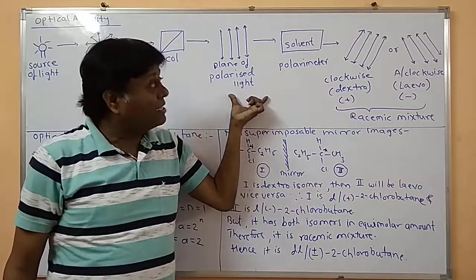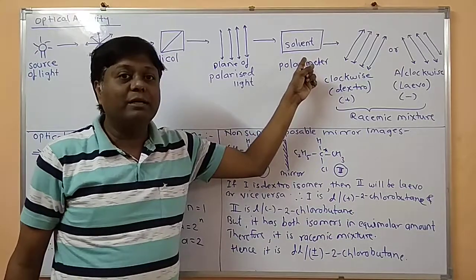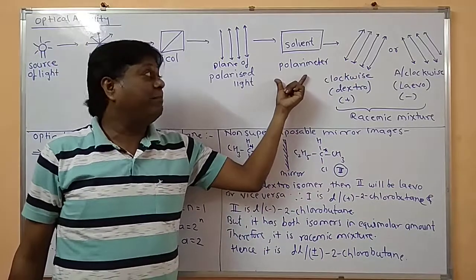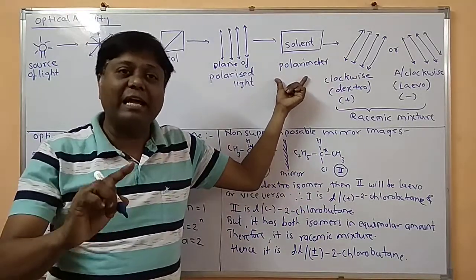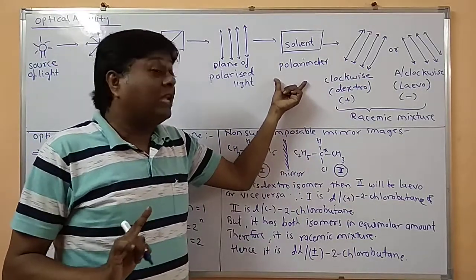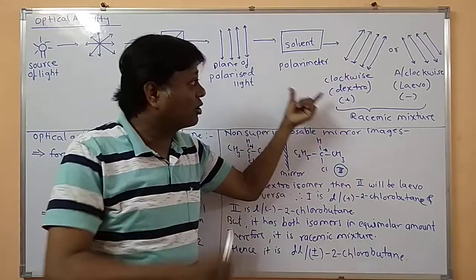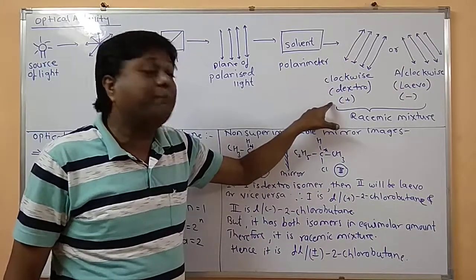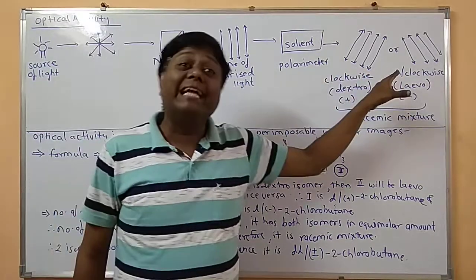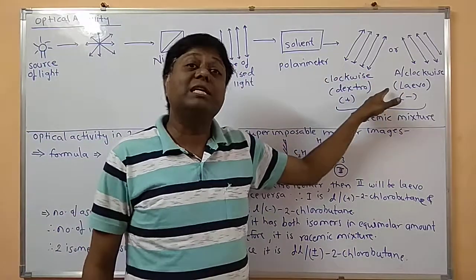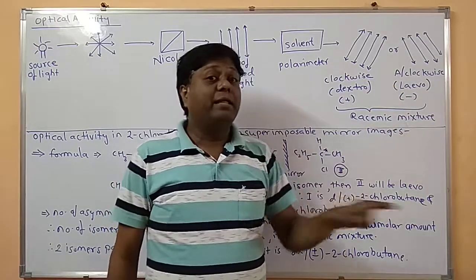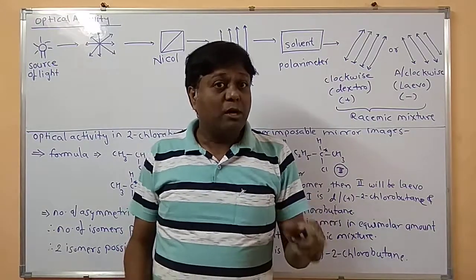When this plane of polarized light passes through the polarimeter, which contains the solvent under study for optical activity, this light rotates either clockwise or anticlockwise. If the light rotates clockwise it is called dextro rotation, represented by a positive sign. If it rotates anticlockwise it is called levo rotation, represented by a negative sign.